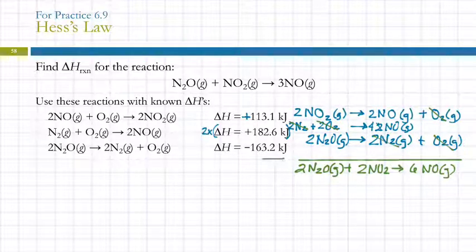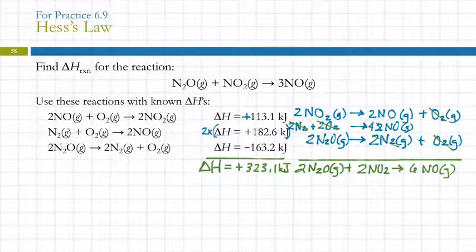Well, we also need to then add up ΔH. So I've got 113.1 plus 2 times 186.6 plus negative 163.2. So this is going to give me, I'm just putting a positive sign there to emphasize that yes, I considered the sign and it's positive that many kilojoules.